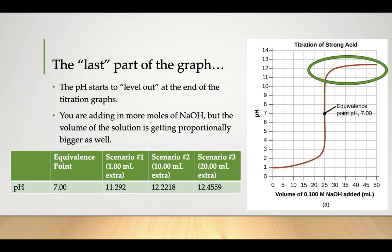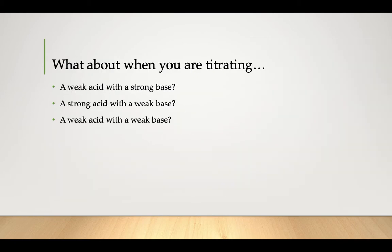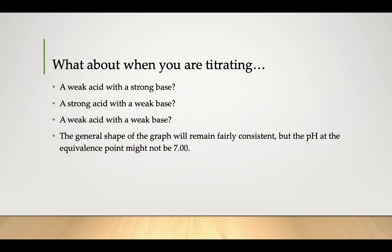If you had done your titration graph in class, it would have looked something like this curve you see here. So what about if you're titrating weak acids with strong bases, strong acids with weak bases, or a weak-weak combination? Then what? What happens to the graph then?